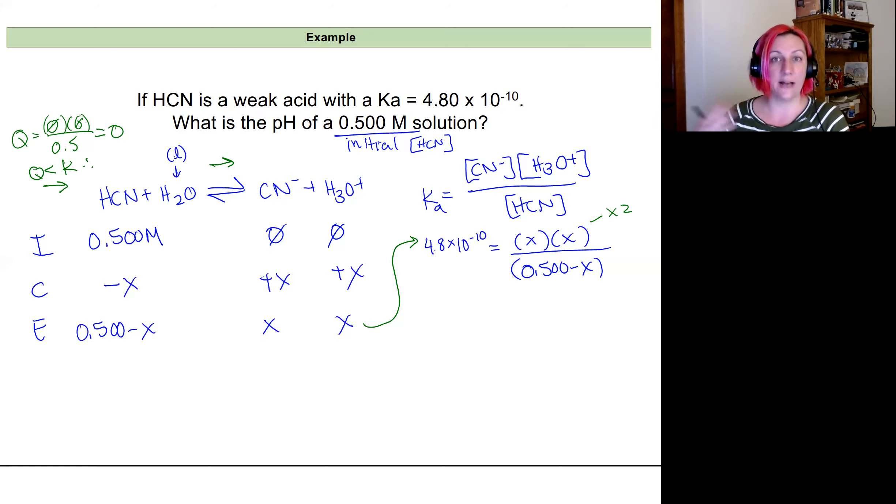And hopefully you'll come up with an expression ready to plug into the quadratic equation. That looks like 0 is equal to X squared plus 4.8 times 10 to the negative 10 X minus 2.4 times 10 to the negative 10. And so my A is 1. This 4.8 times 10 to the negative 10 is B. And this negative 2.4 times 10 to the negative 10 is C.